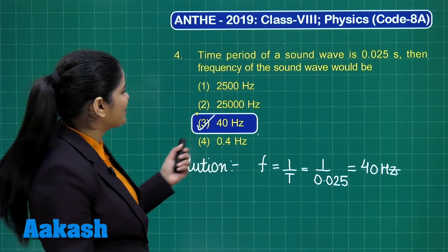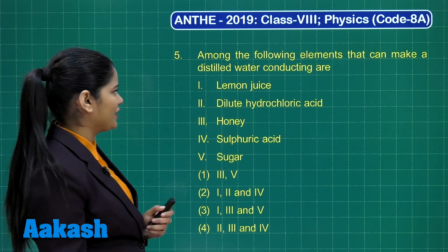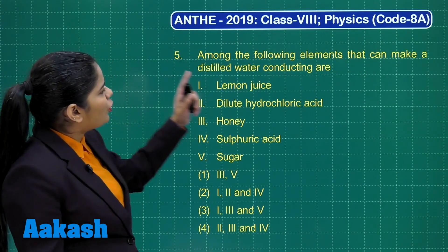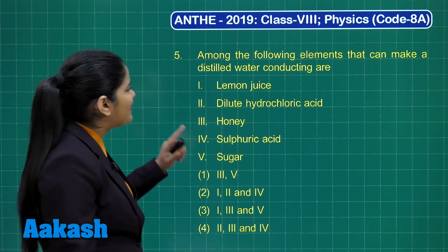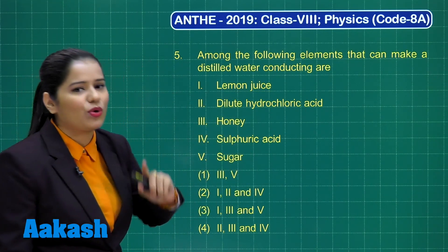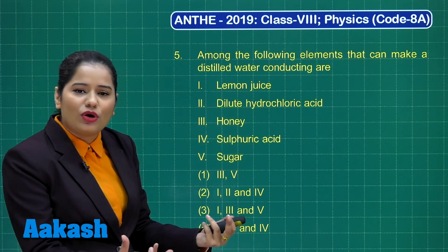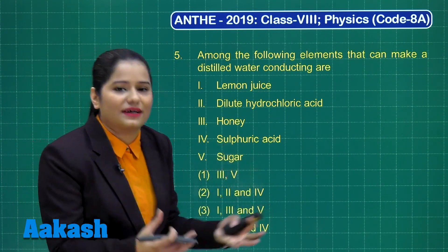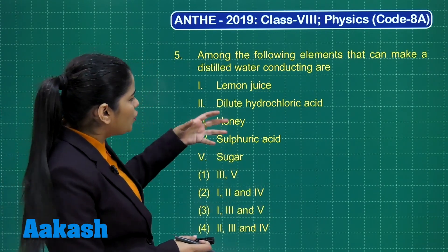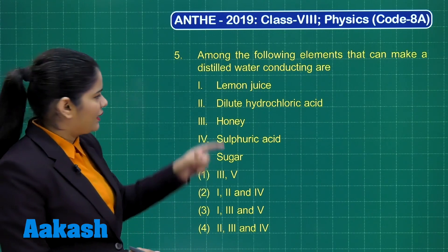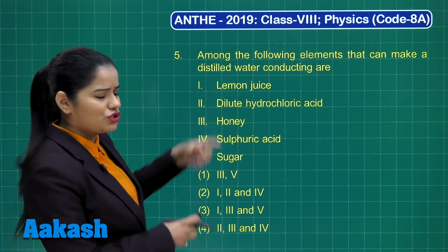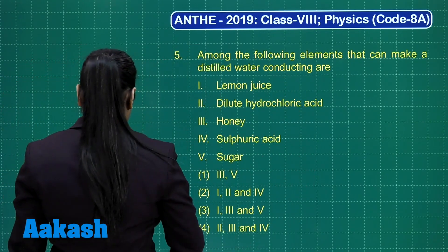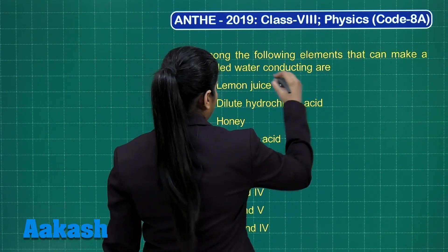Let's proceed to the next question. This question asks: among the following elements, which can make distilled water conducting? Distilled water is not conducting — we want to make it conducting. So what do we need to add? Lemon juice — obviously, lemon juice is going to make it conducting.